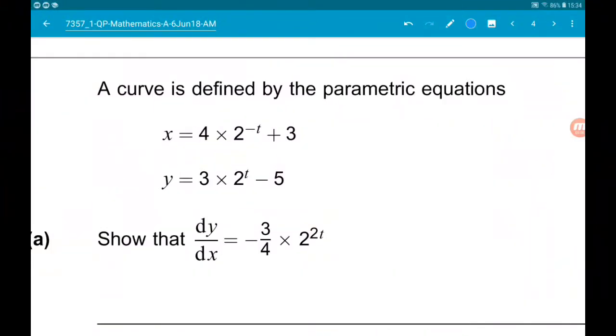Okay, question 5. We have parametric equations. So x is 4 times 2 to the minus t, add 3, and y is 3 times 2 to the t minus 5.